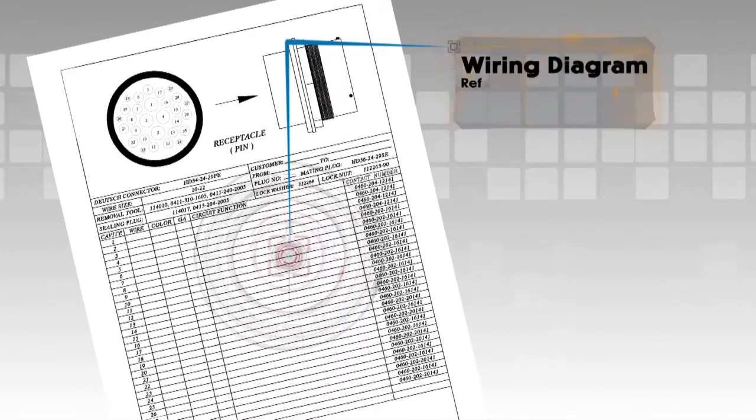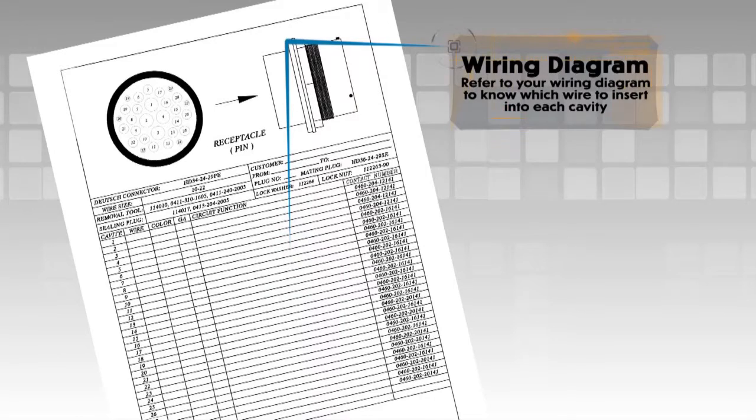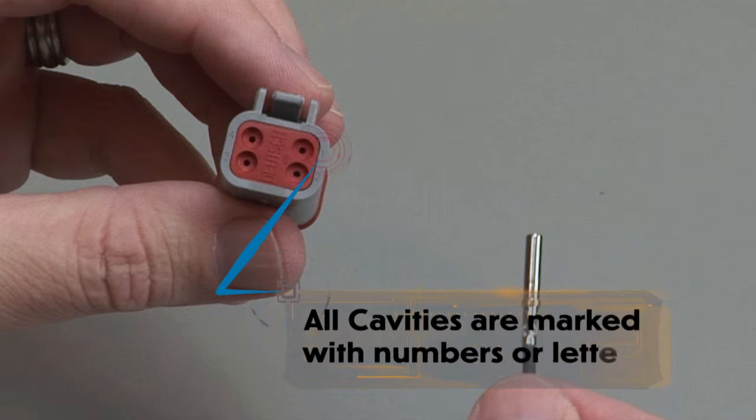Refer to your wiring diagram to know which wire to insert into each cavity. All cavities are marked with numbers or letters.